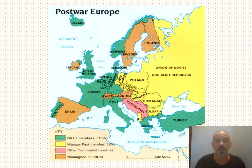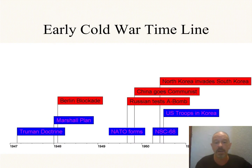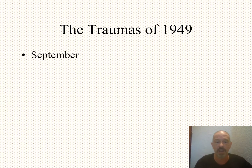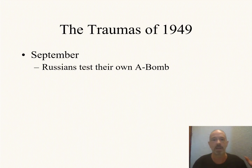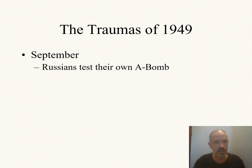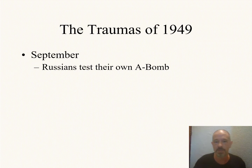Looking at our timeline, we're in 1949 with the formation of NATO. But then 1949 hits. In September, the Soviet Union tests their own A-bomb. The United States explodes in terror — the Soviets now have this. They could use this against us. And even though the United States still had an advantage militarily in number of bombs, it sends a major shockwave through the United States.